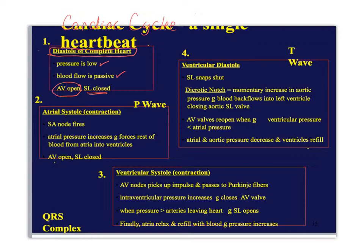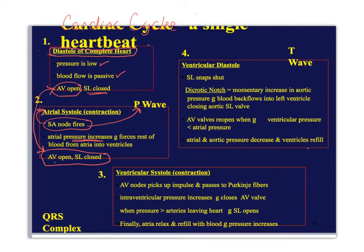Some of the cells in the SA node are going to depolarize — this is called atrial systole, so contraction of the atria. The electrical signal being picked up will show up on the EKG as a P wave. As you squeeze the rest of that blood out of the atria, you're increasing the pressure and that shoots the rest of it into the ventricles. The AV valve and the semilunar valve remain the same as before.